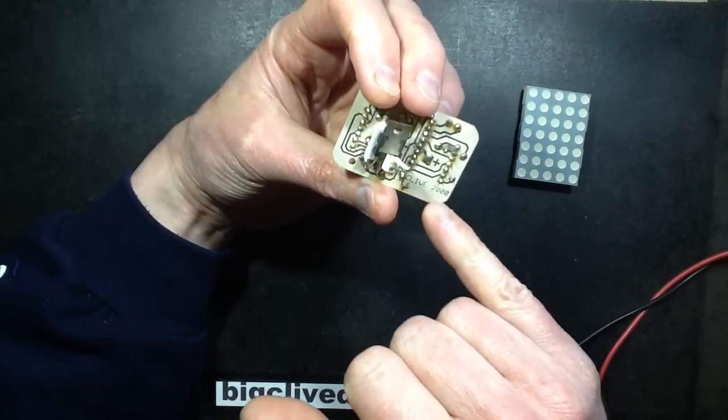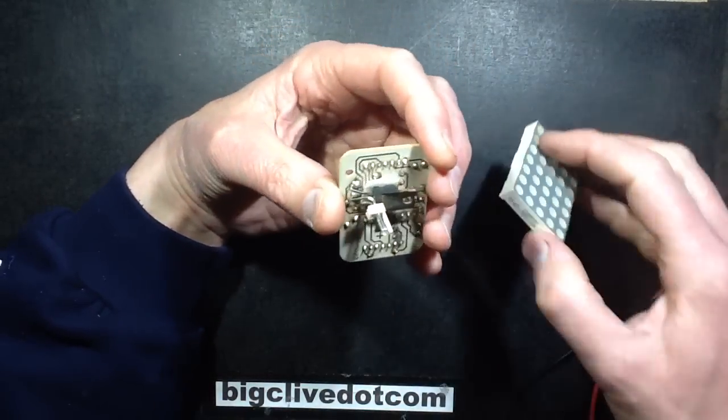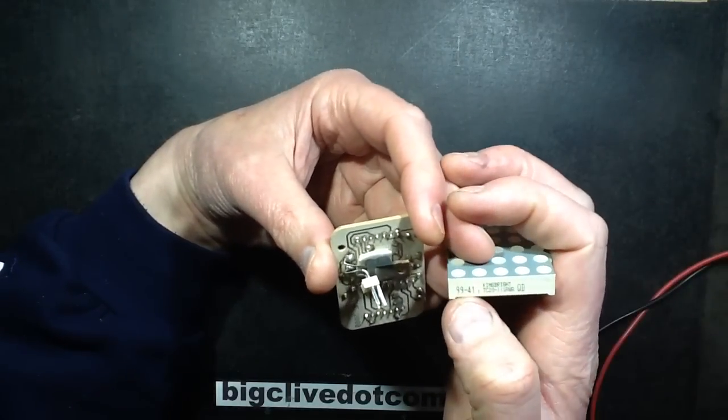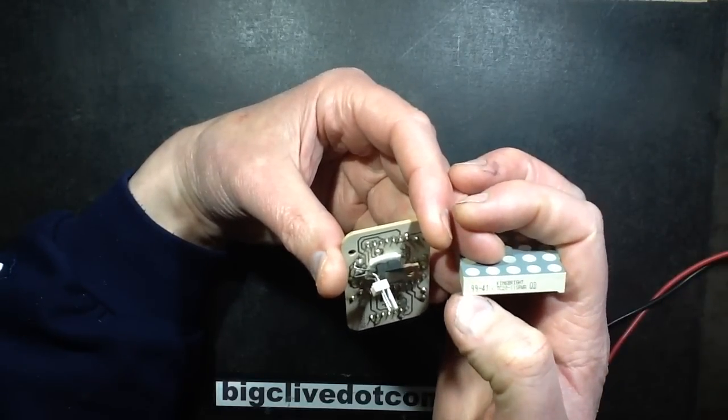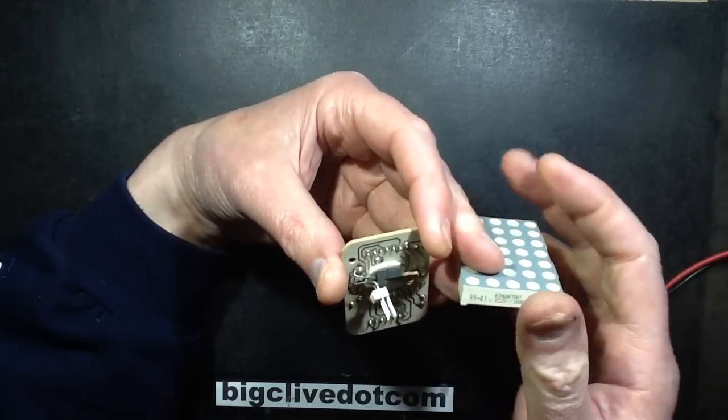Oh, it says Clive 2000, so that puts a date in it, which tallies up with the fact that this says 1999, week 41 1999 in the display.